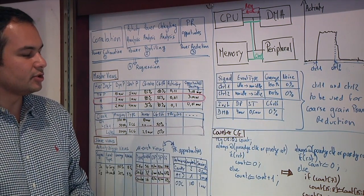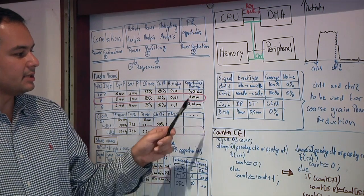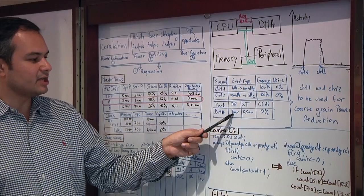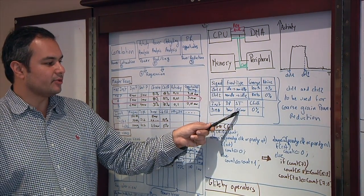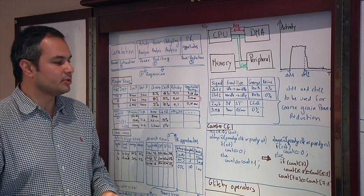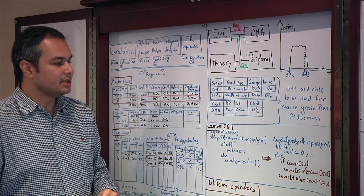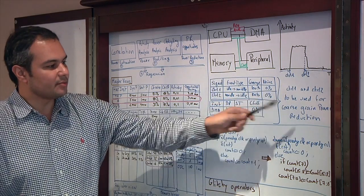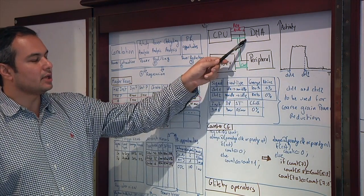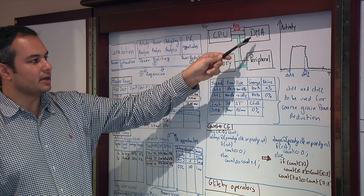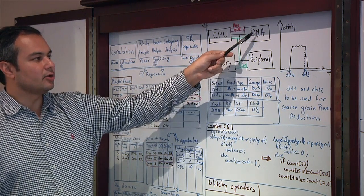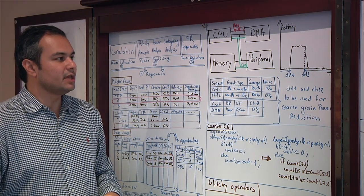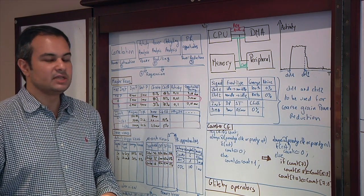Same thing for the second control signal. You can see that the power profile of the DMA is such that the dynamic power is 40 milliwatt, the static power is 0.5 milliwatt, and the clock gain efficiency is zero percent. So now, using the control one and control two signals, you can do coarse-grained power reduction by clock gating the DMA controller, because there is no need for the DMA clock to toggle when the DMA is not used.